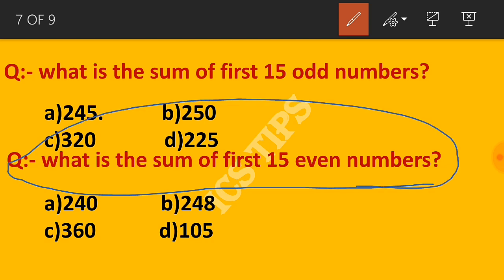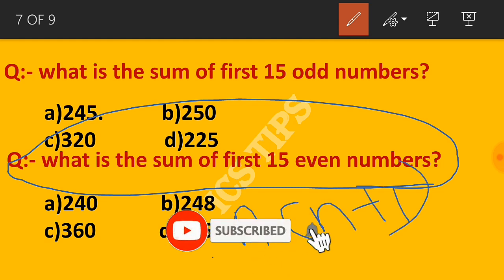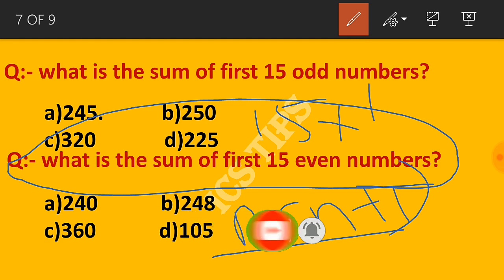For even numbers, the formula is n times (n+1). So for 15 even numbers, it's 15 times 16 equals 240.